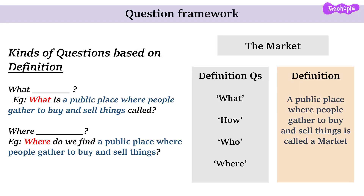Examples of the market would be fruit and vegetable market, fish market, and farmer's market. How do we frame questions based on these vocabulary categories? Simply by using question starters. For the definition category, we could use what, how, who and where. For example: What is a public place where people gather to buy and sell things called? Or using where: Where do we find a public place where people gather to buy and sell things?